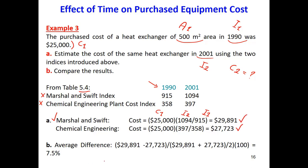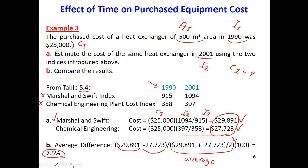For Chemical Engineering we use the same equation and get two cost values from the two methods. To find the error between them, we take the average of the two values — the sum divided by two — and then compute: (Marshall Swift result minus Chemical Engineering result) divided by the average, times 100. The error is about 7.5%, which is acceptable since below 10% is always considered a good, acceptable error.